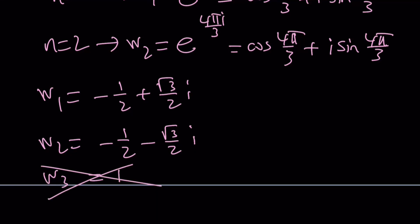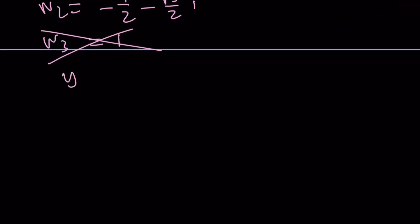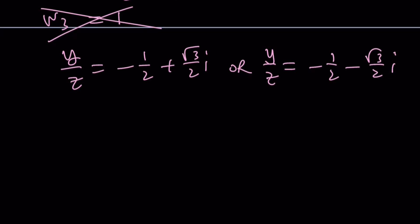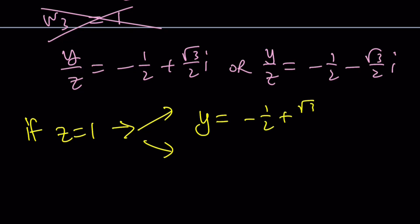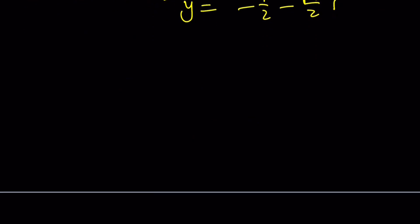But w is y over z, so now we convert. y over z equals negative one-half plus (root 3 over 2)i, or y over z equals negative one-half minus (root 3 over 2)i. For example, if z equals 1, then y equals negative one-half plus (root 3 over 2)i, or y equals negative one-half minus (root 3 over 2)i. What do y and z have in common? Let's talk about that.